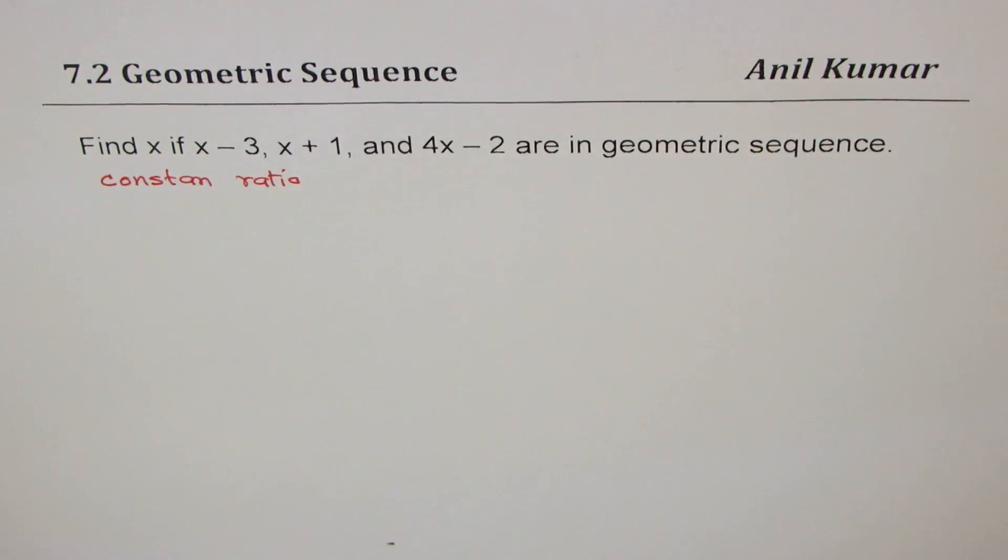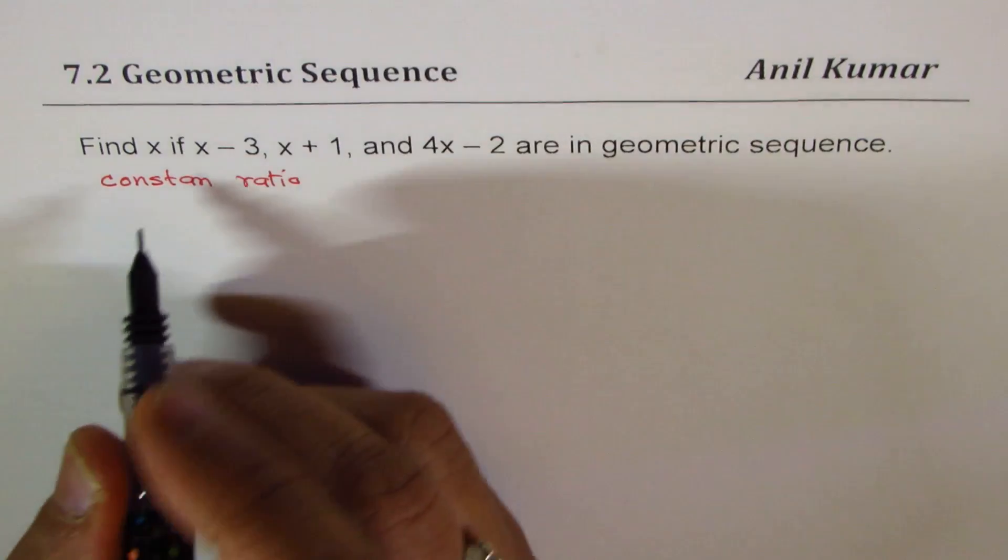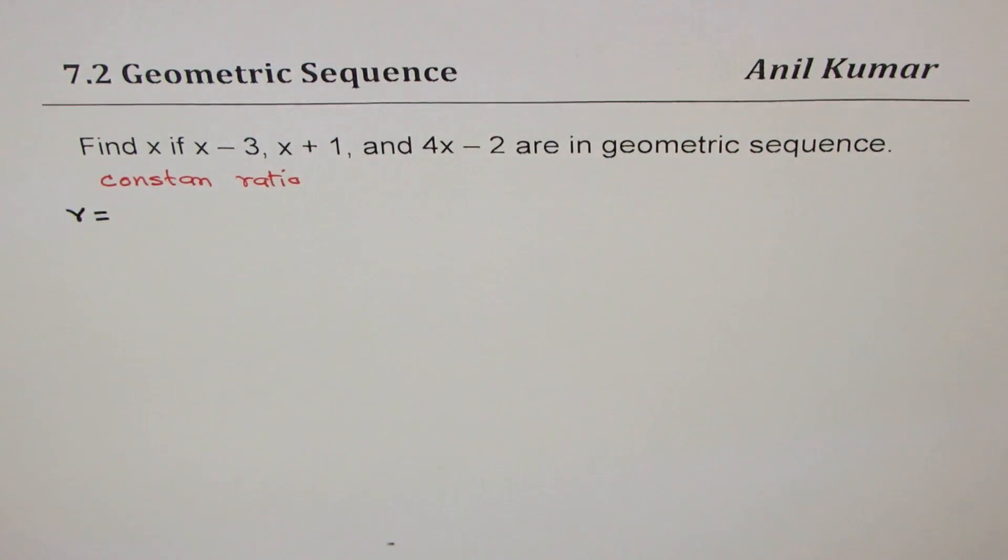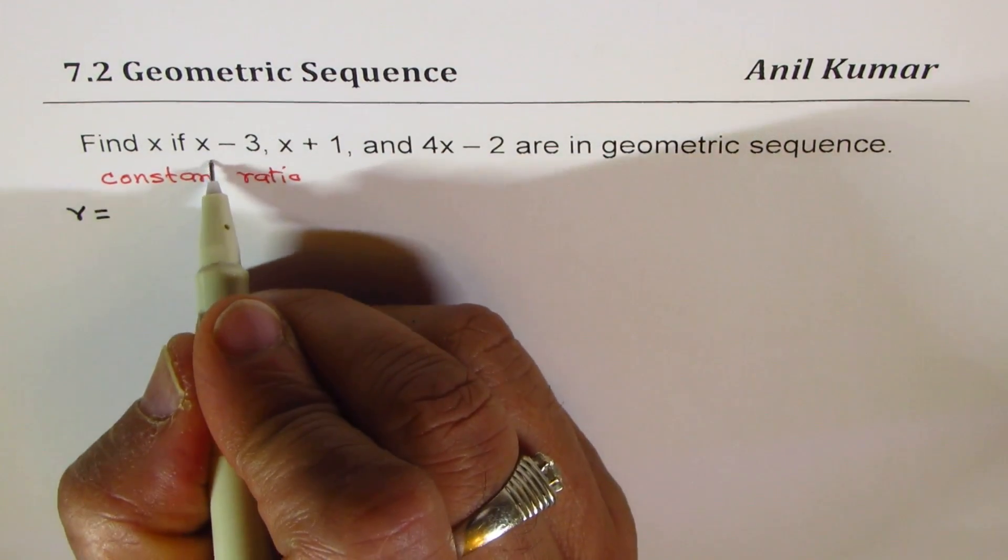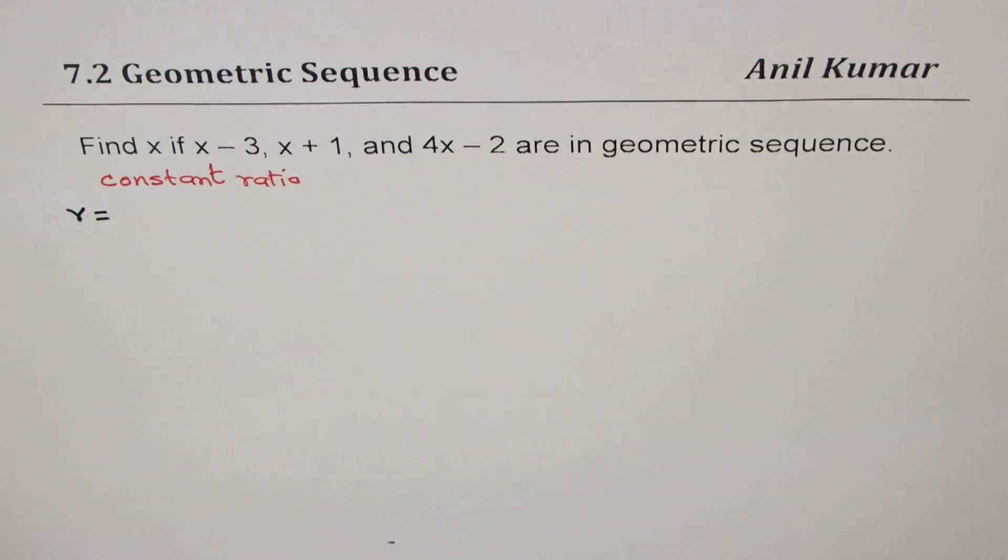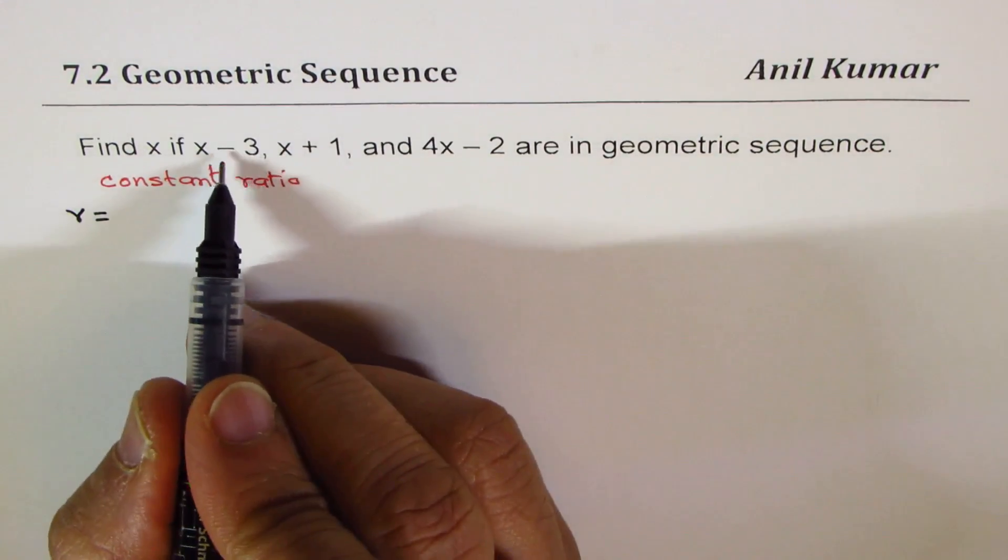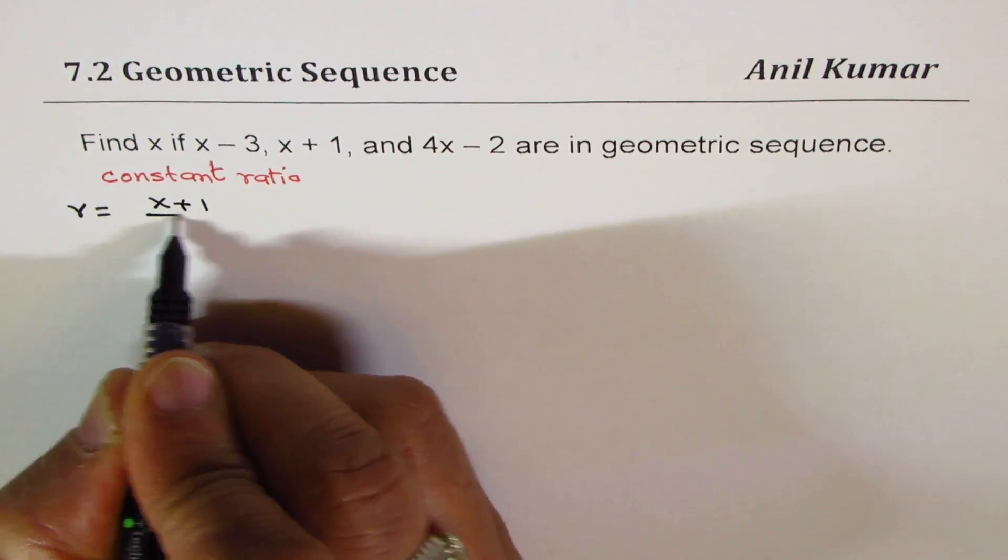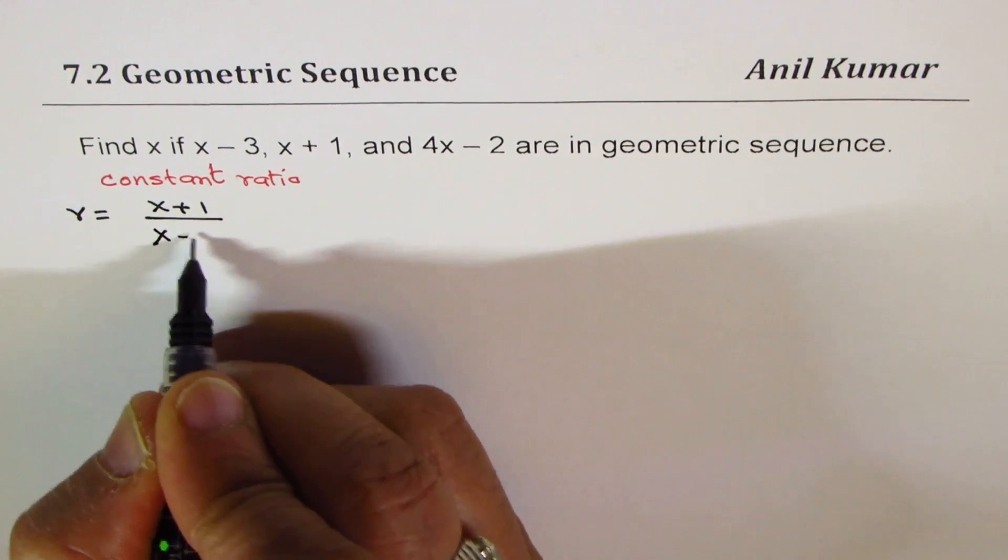So based on this, we can solve the question. Let's say that the ratio is r, the constant ratio. This constant ratio is between consecutive terms. That is, if we're given three terms, you divide x + 1 by the previous term, which is x - 3.